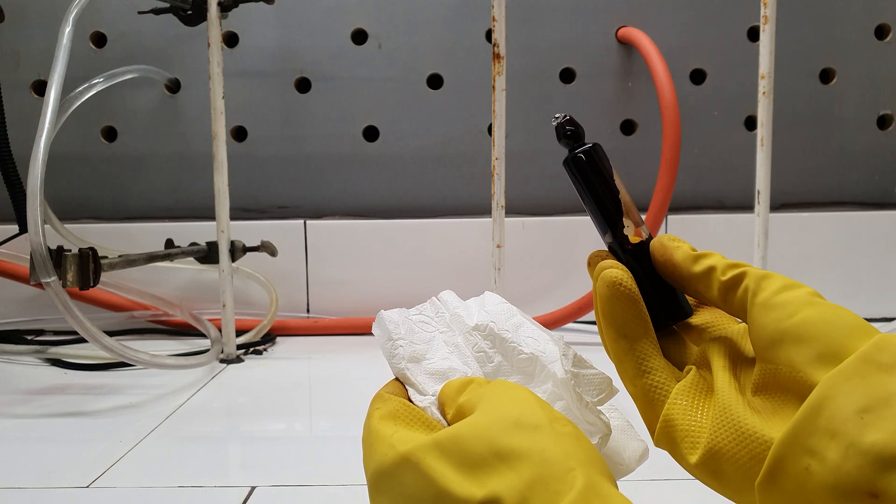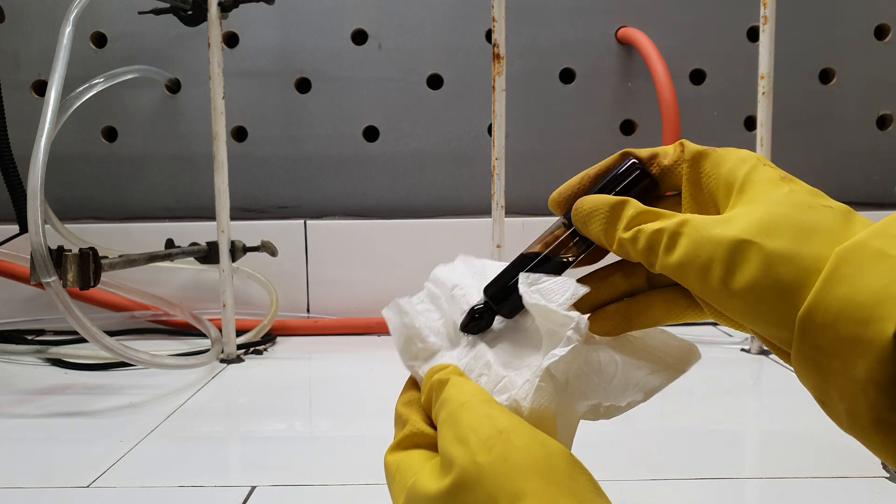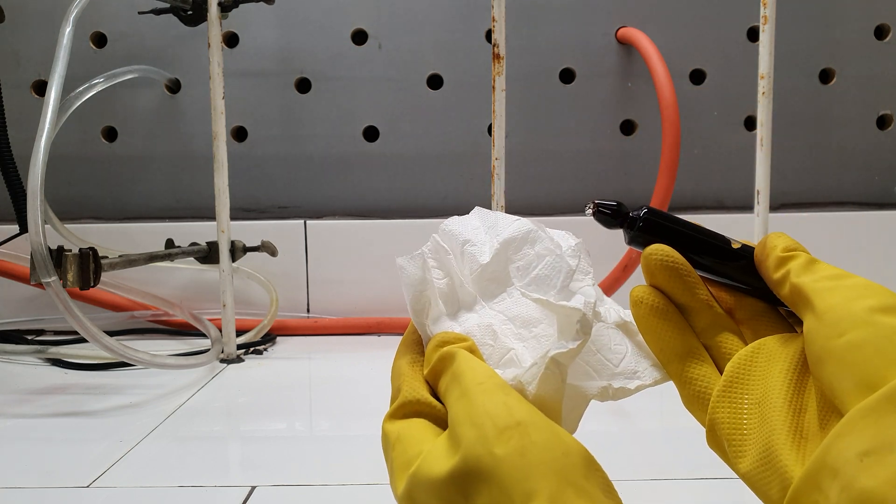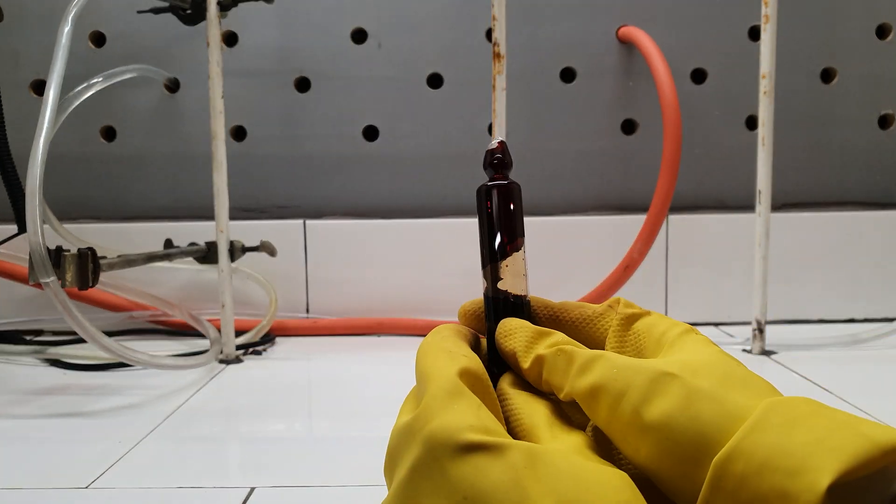A simple test to check if the ampule is sealed correctly is to invert it and rub its edge on a paper towel. If there is any leak, it will leave a mark on the paper. Mine didn't, so it must have been sealed correctly.